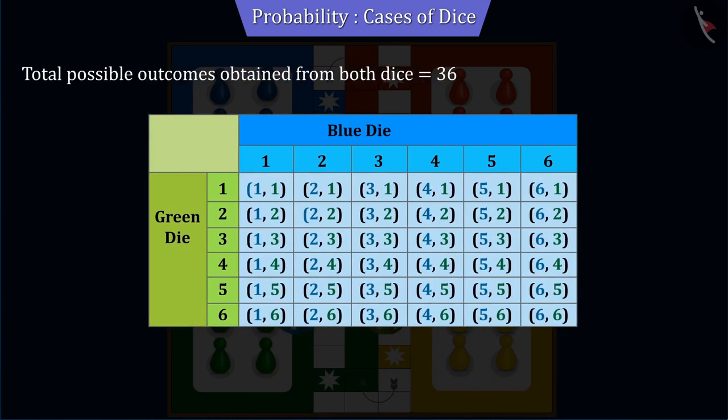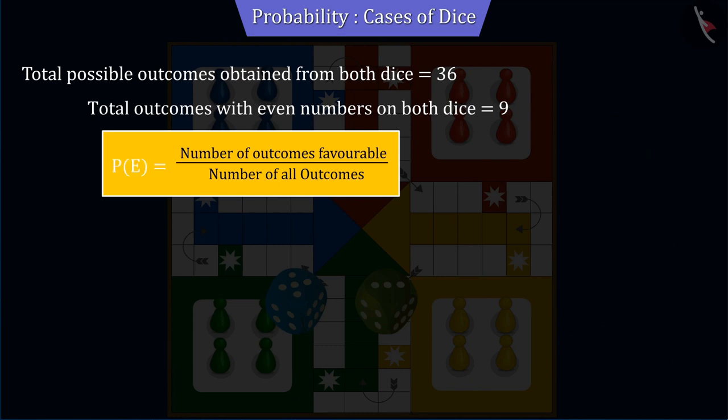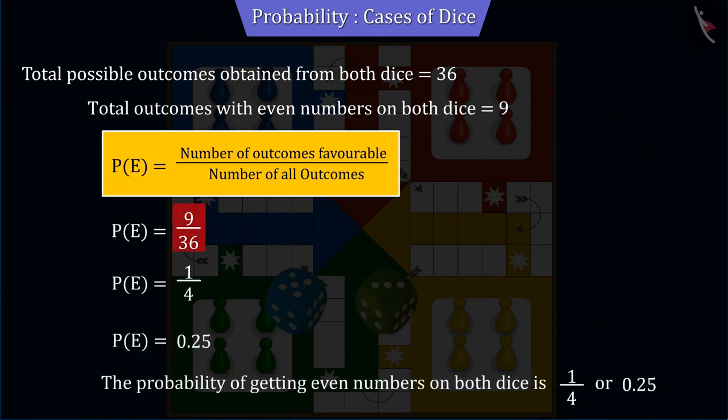We saw that rolling both dice together gives 36 possible outcomes. From those, there are a total of 9 outcomes having even numbers on both dice. Therefore, the number of favorable outcomes is 9. So the probability of getting even numbers on both dice is 9 by 36, or 0.25.